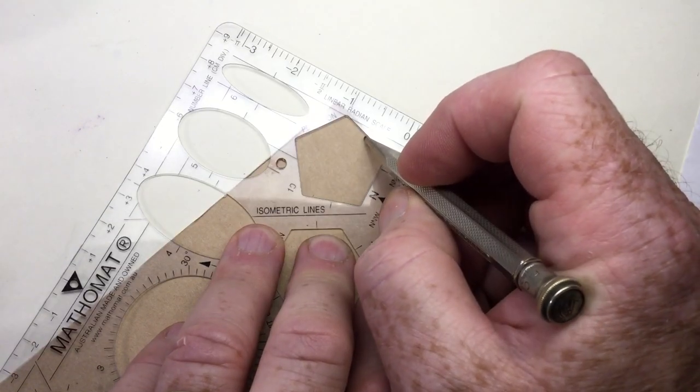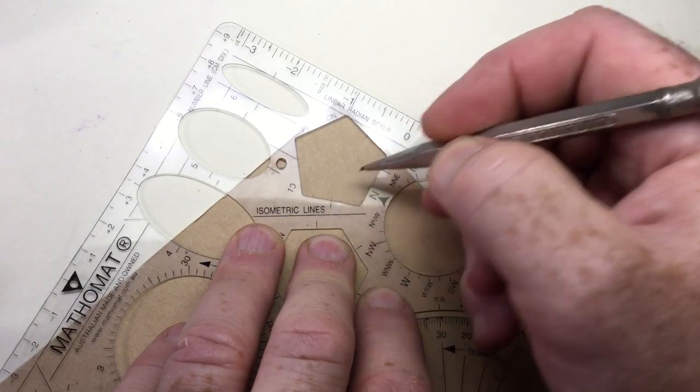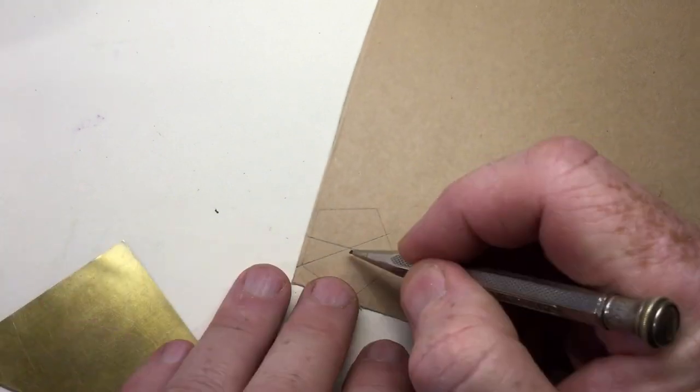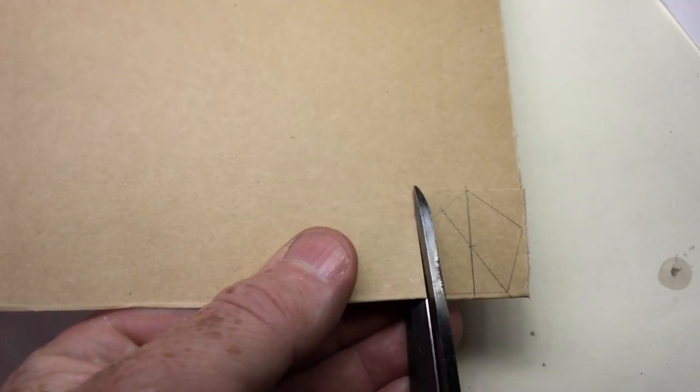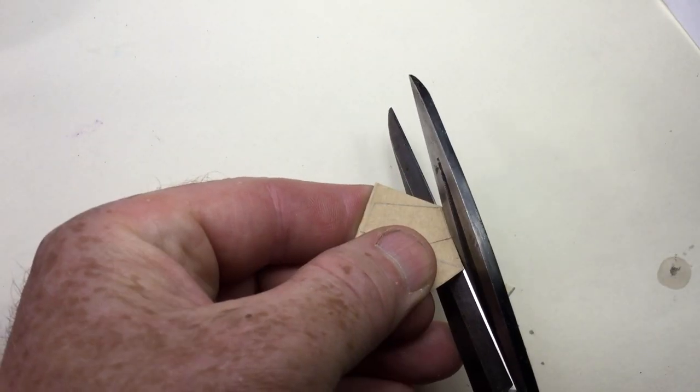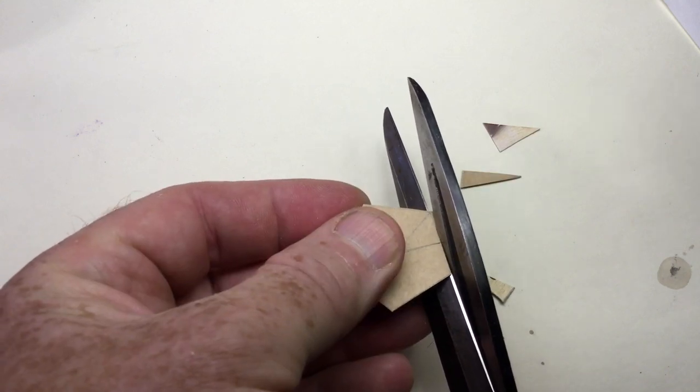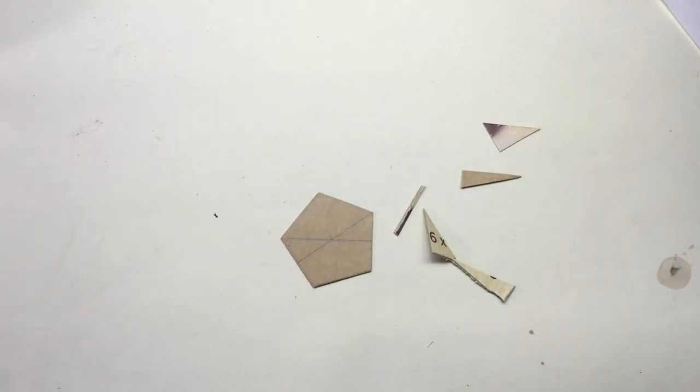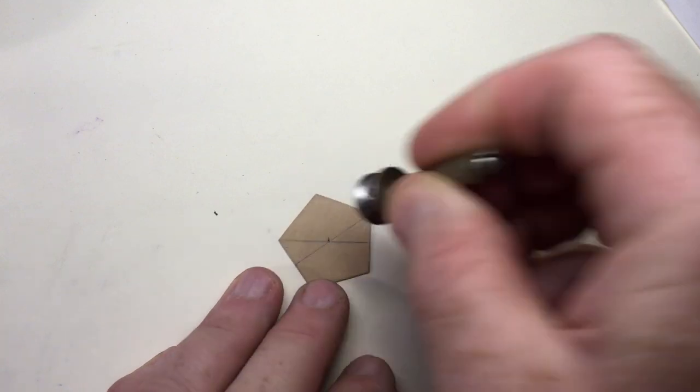Two of the sides have halfway marks, and by lining these up with their opposite apex, you find the centre of the pentagon. Make a hole in the middle with something pointy.